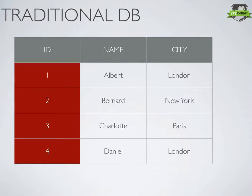With our traditional relational database we have table structure, rows, and columns. We put our items in an individual row and the properties of that item are defined by the columns.